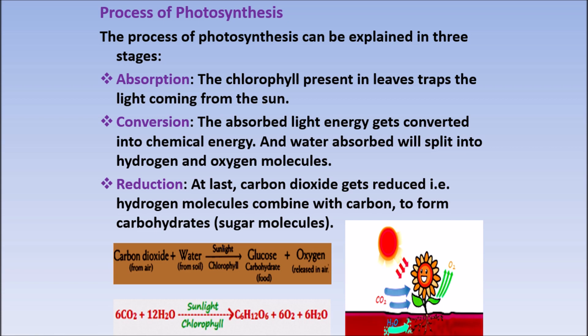To jo photosynthesis ka process hai, wo teen stages mein: pehla absorption — jo chlorophyll present hota hai green leaves mein, wo light energy ko absorb karta hai; then conversion — light energy ko chemical energy mein convert karta hai, aur jo water absorb ho raha hota hai, wo hydrogen aur oxygen molecule mein split ho jata hai; next reduction — jo carbon dioxide air se jata hai, wo reduce hokar carbohydrates banata hai — that is the food for plants.